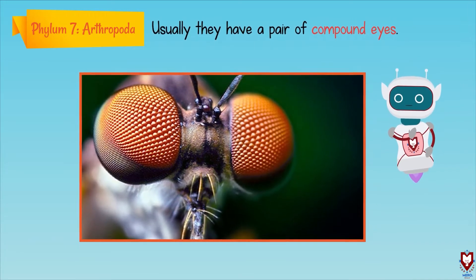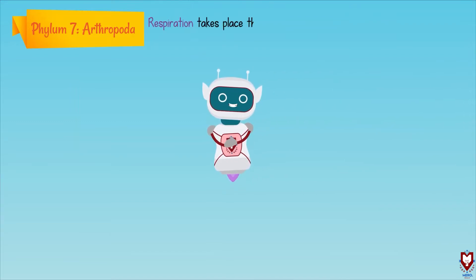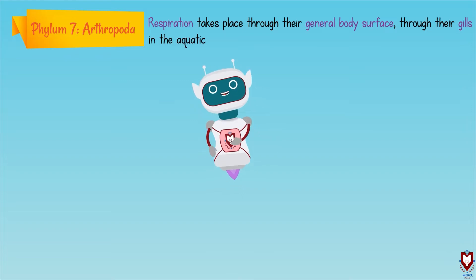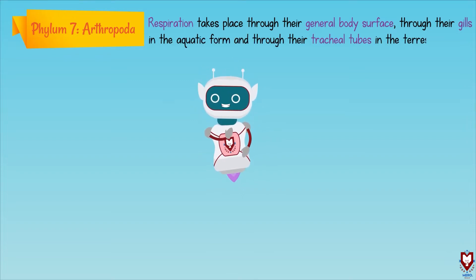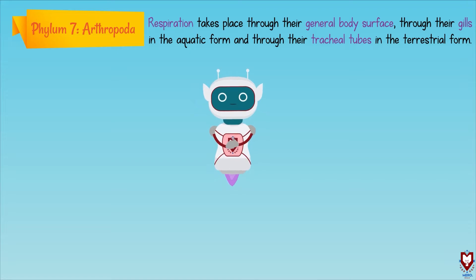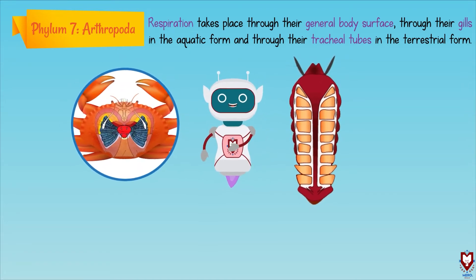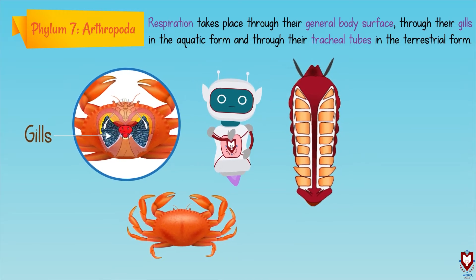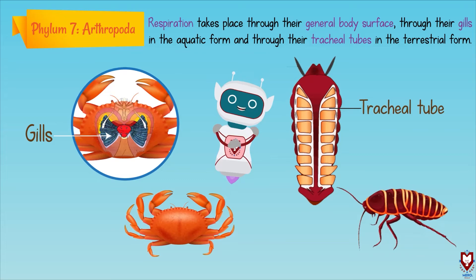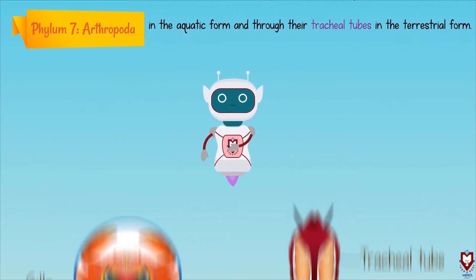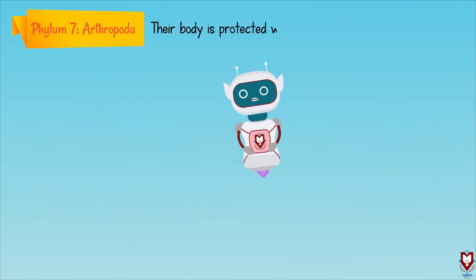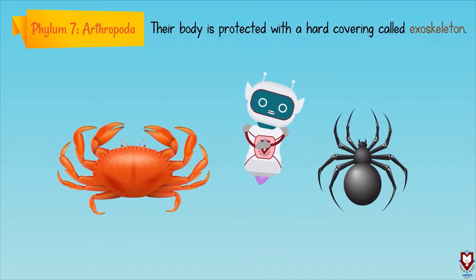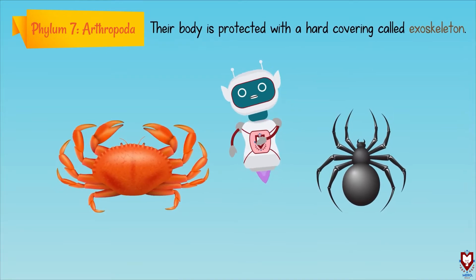The next characteristic is respiration. Respiration takes place through their general body surface, through gills in the aquatic form, and through tracheal tubes in the terrestrial form. Their body is also protected with a hard covering called exoskeleton.